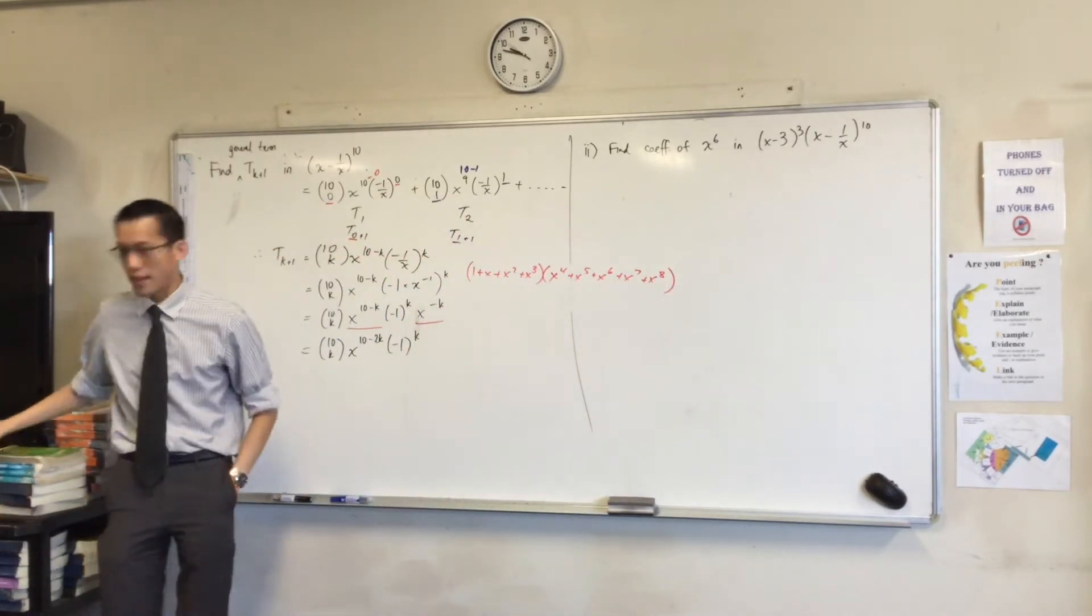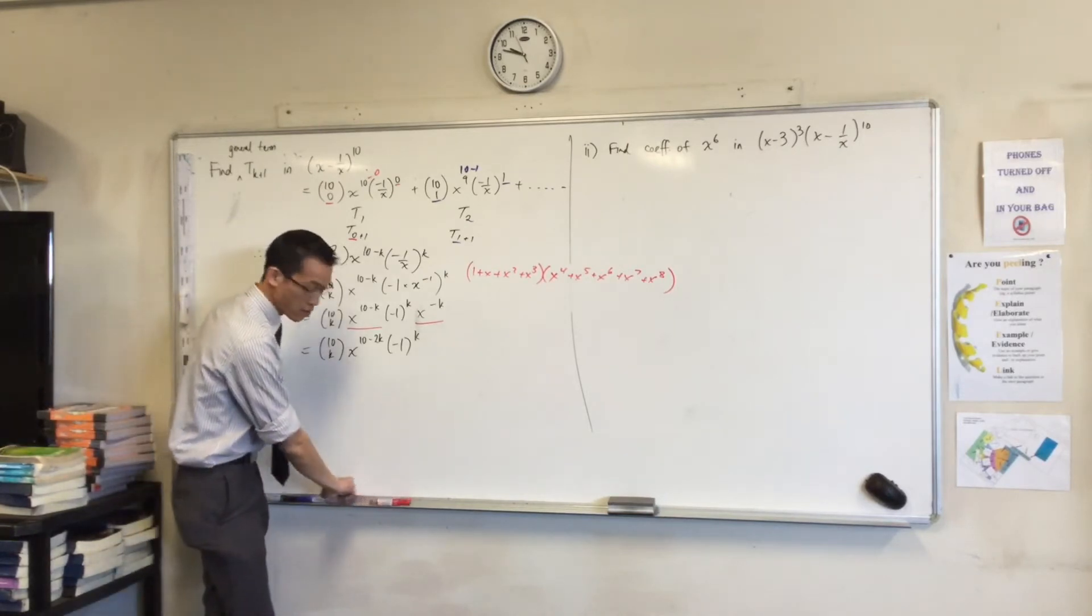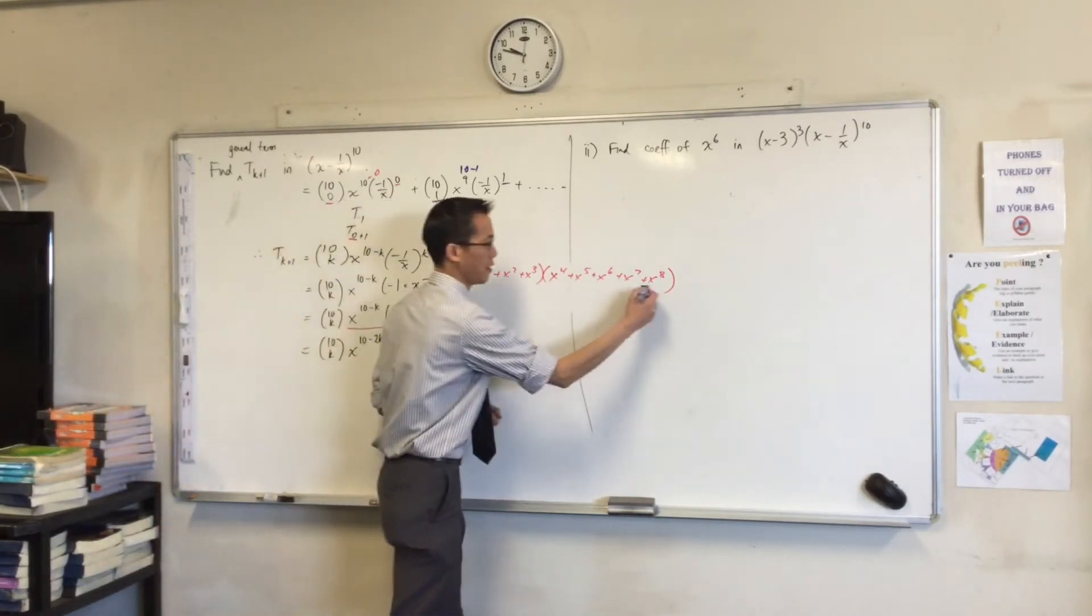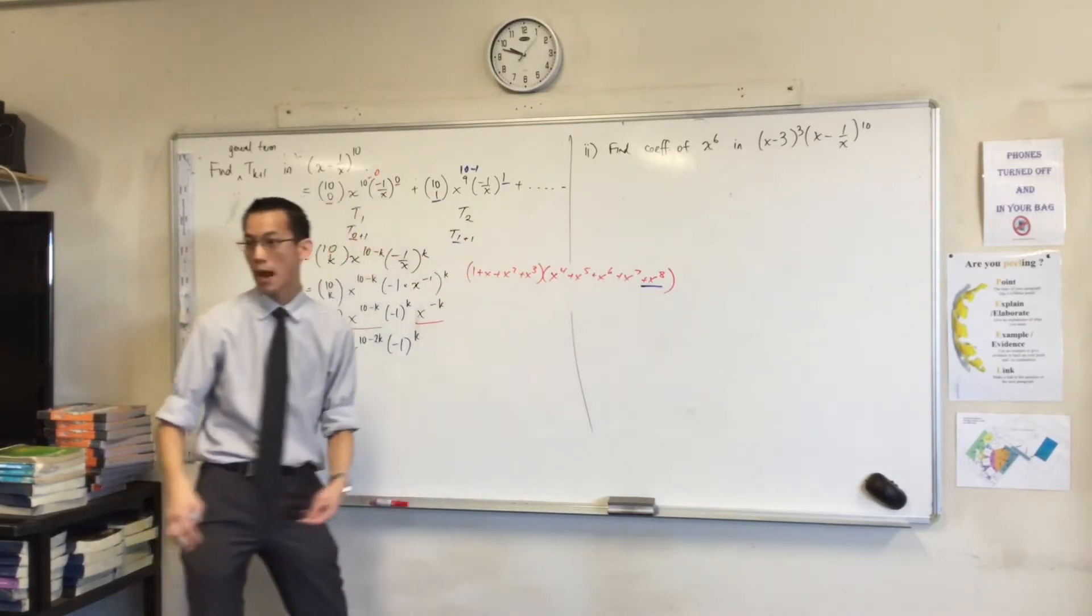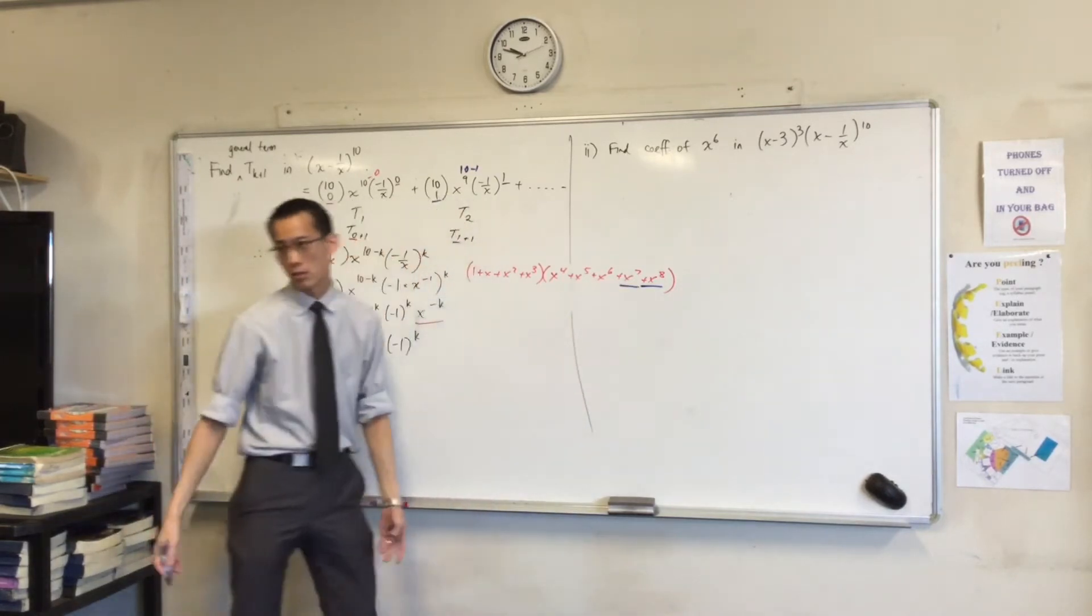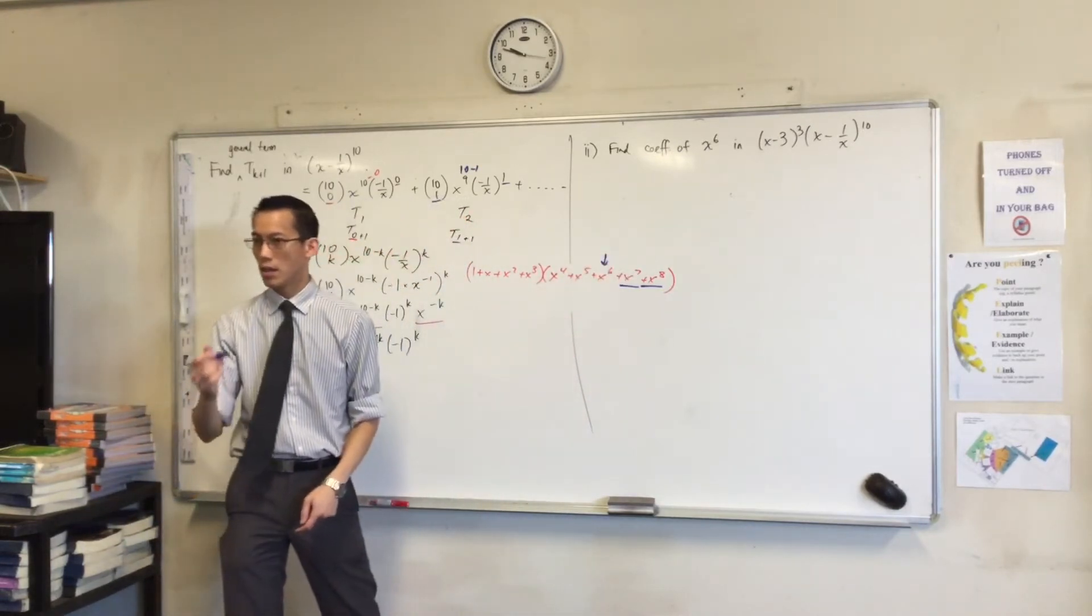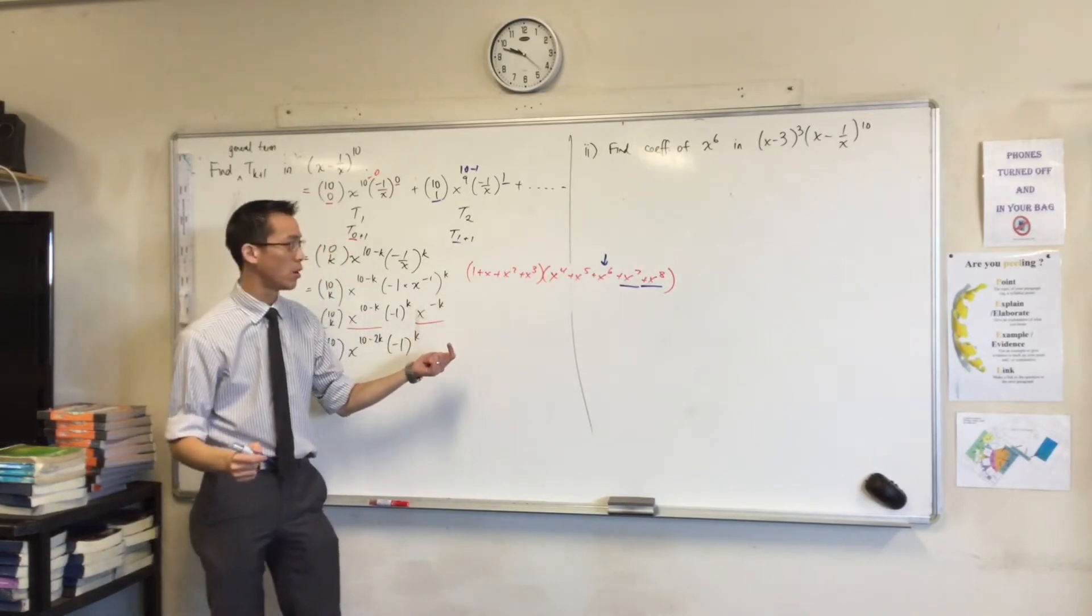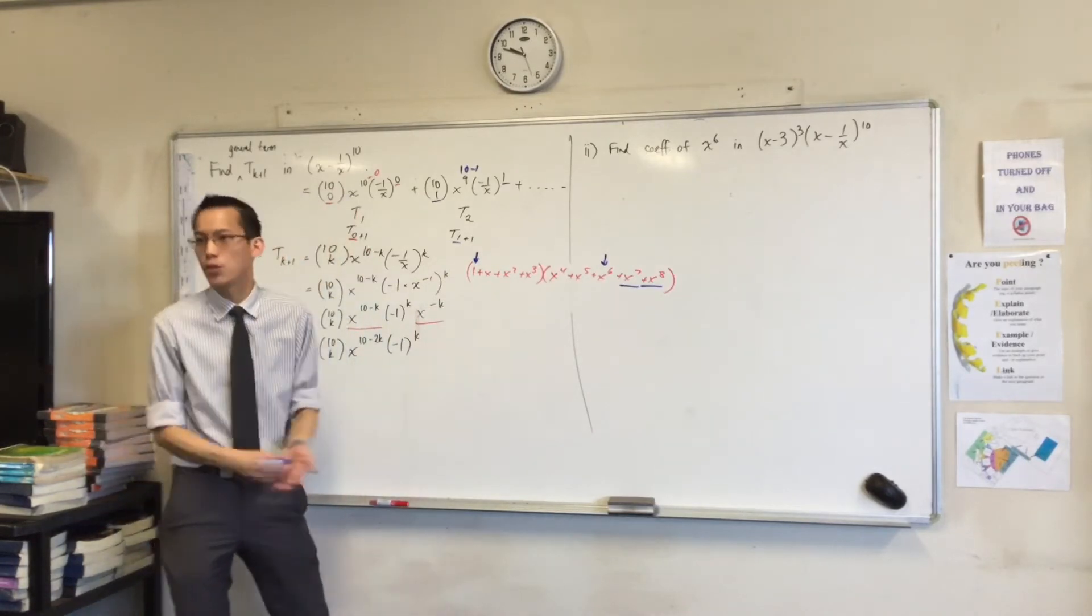If the question was find the coefficient of x to the 6, you can clearly see, for instance, there are some terms that are useless to you in this. They will never give you an x to the 6. For example, this guy. Pointless, because he's already gone over, and then he's going to multiply something that will make the power even bigger, right? So you can safely ignore it. You can also ignore this for the same reason. But then when you get to this guy, you're like, oh wait, if I pair that up with one of these terms over here, I will get x to the 6 term. Which one? Yeah, it has to go with this, right?